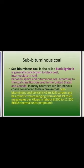Third, subbituminous coal, also called black lignite. It is generally dark brown to black coal, intermediate in rank between lignite and bituminous coal according to the coal classification used in the United States and Canada. In many countries, subbituminous coal is considered to be a brown coal. It contains 42 to 52 percent carbon and has calorific values ranging from about 19 to 26 megajoules per kilogram.